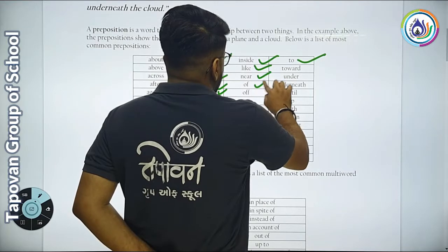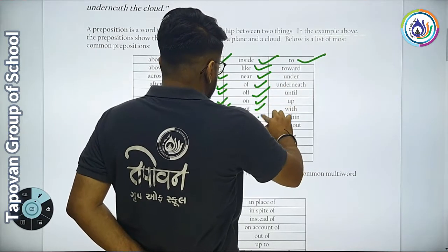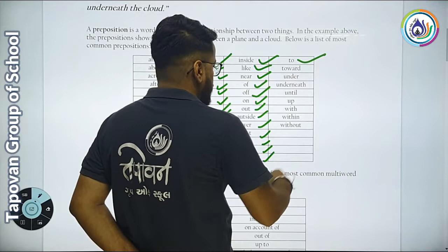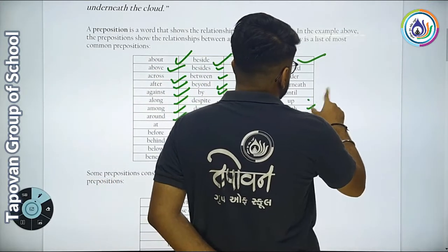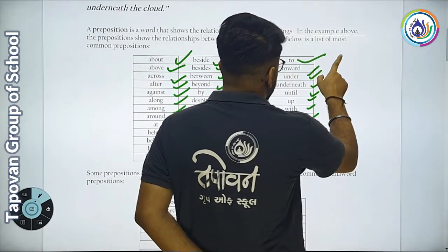Like, near, of, on, out, outside, over, past, since, through, throughout, without, within, with, until, underneath, under, and toward. These are the common prepositions.